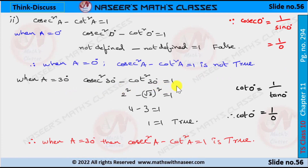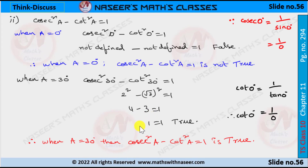When a = 30°, the identity becomes cosec²30° − cot²30° = 1. We know cosec30° = 2 and cot30° = √3. Writing the equation: 2² − (√3)² = 4 − 3 = 1, so LHS = 1. Therefore 1 = 1, this is true when a = 30°.